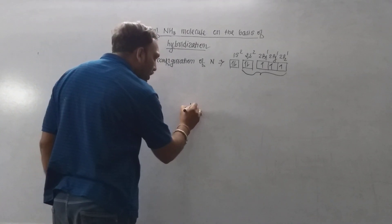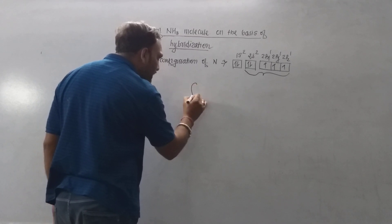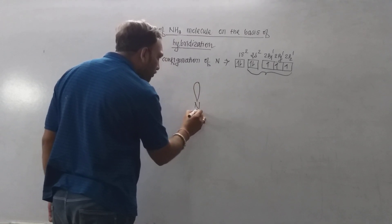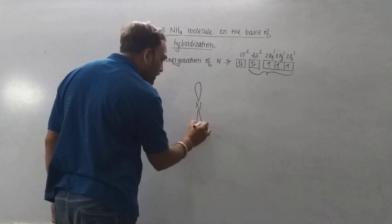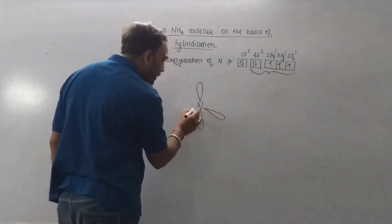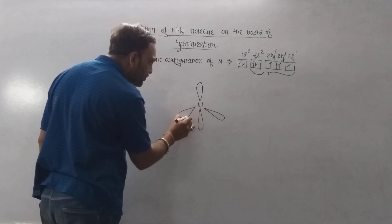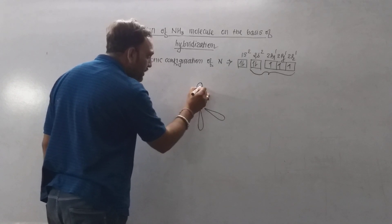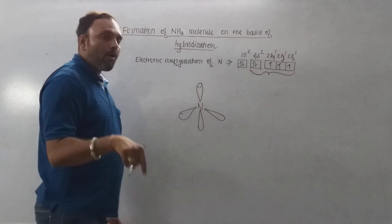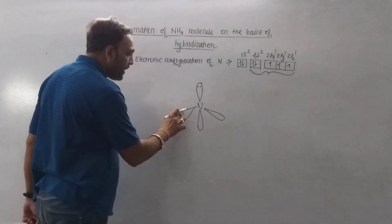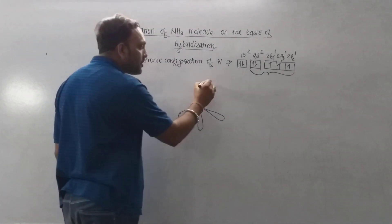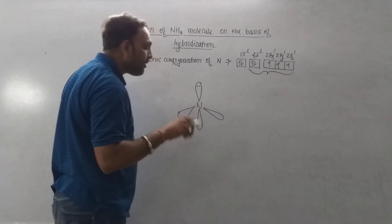Now, out of 4 hybrid orbitals, one of the hybrid orbitals contains a pair of electrons. The hybrid orbital having pair of electrons remains as a lone pair on nitrogen.